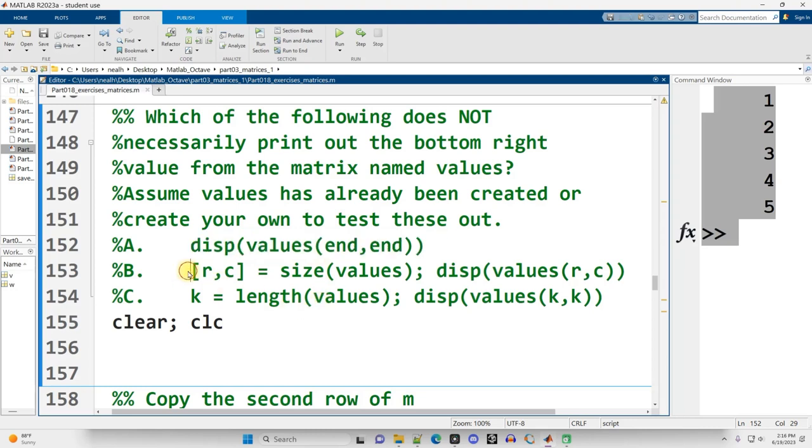This one right here starts off by using the size function to determine how many rows and columns there are in our values matrix. And puts that information into R and C. And then displays out values, parentheses, R, comma, C. This will also work. This one, this part C, will work in some circumstances but not all circumstances.